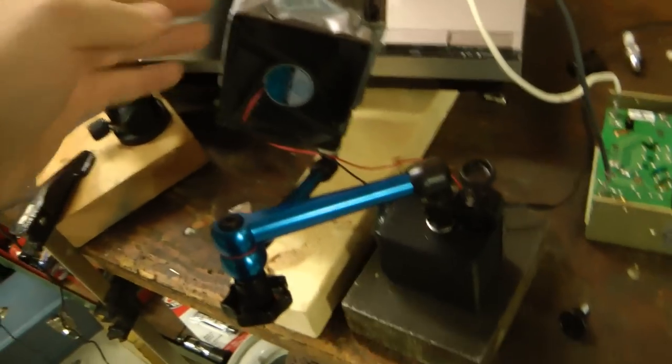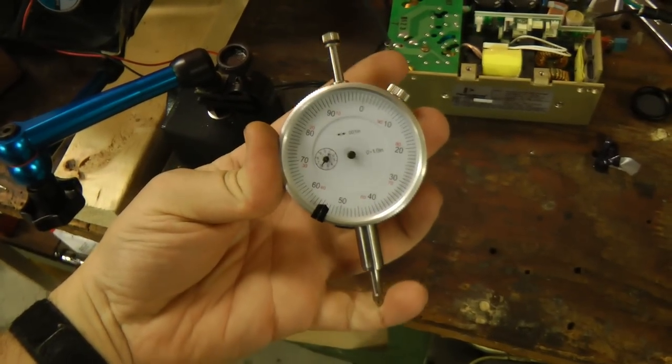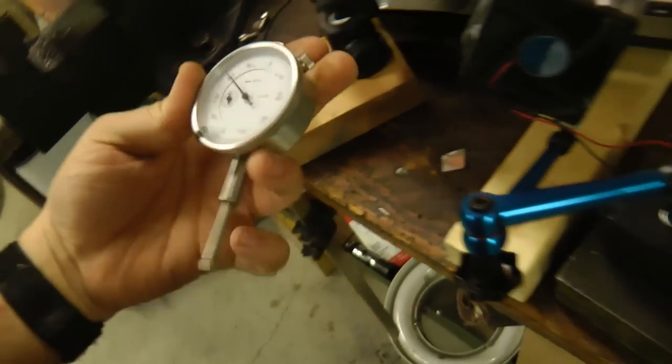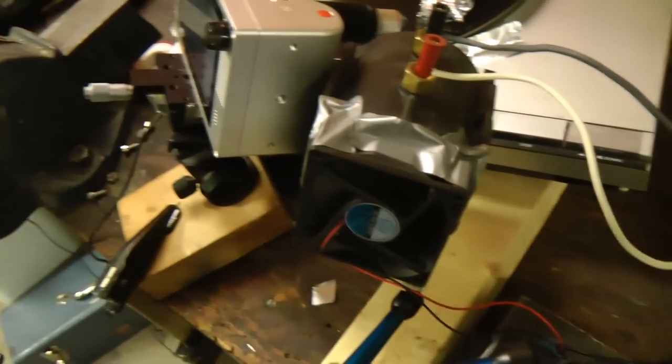For mounting the light source, I found one of these machinist's dial indicator mounts. Normally you mount one of these things on the edge and use it to hold it on your machining setup, but this works perfectly for allowing you to put the light wherever you want and get it aimed correctly.